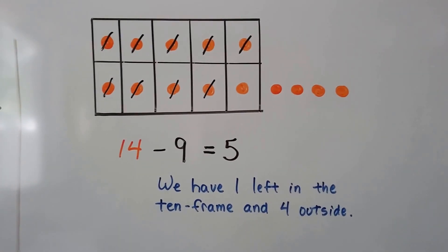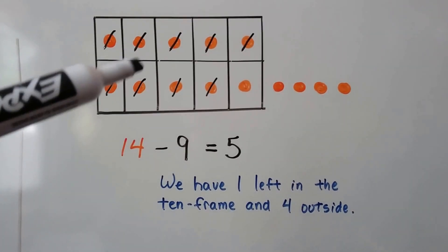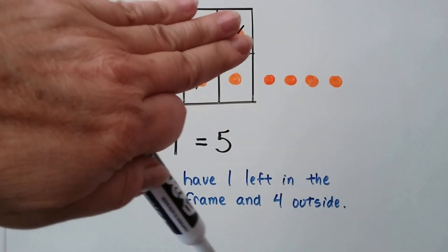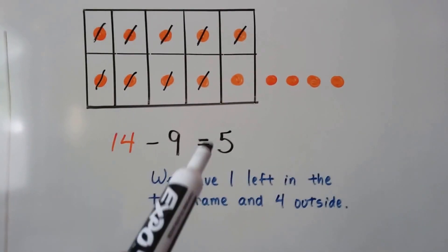Or if you're using counters like pennies or chips or something, you just remove those 9 and we have 5 left over. So 14 minus 9 equals 5.